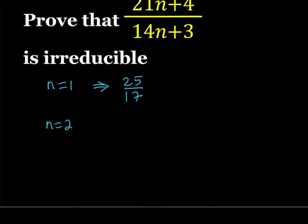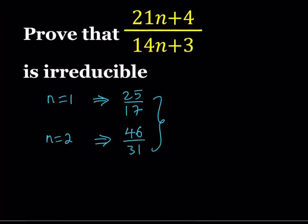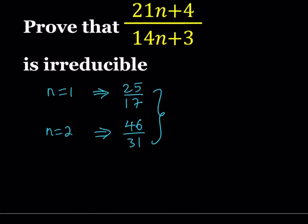For example, n equals 2. If n is equal to 2, I'm getting 46 divided by 31. Again, these two numbers have no common factors besides 1. So, in other words, if a fraction is irreducible, we can safely say that the greatest common divisor of the numerator and the denominator is 1.